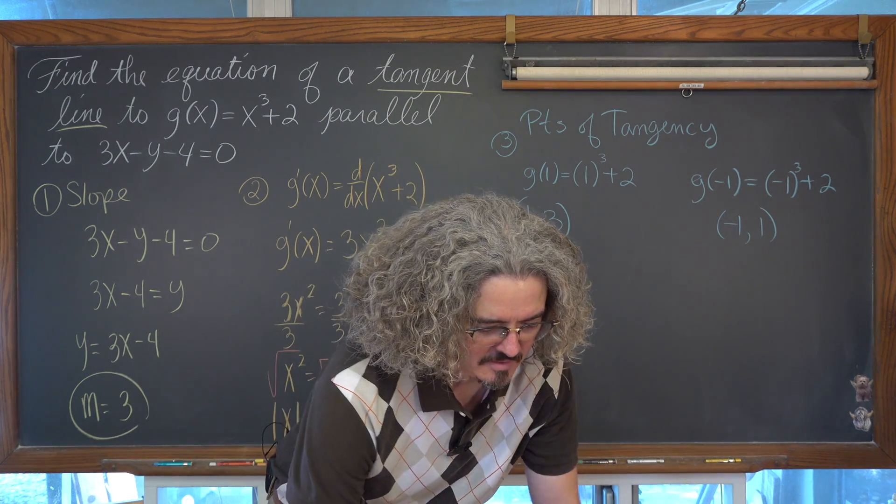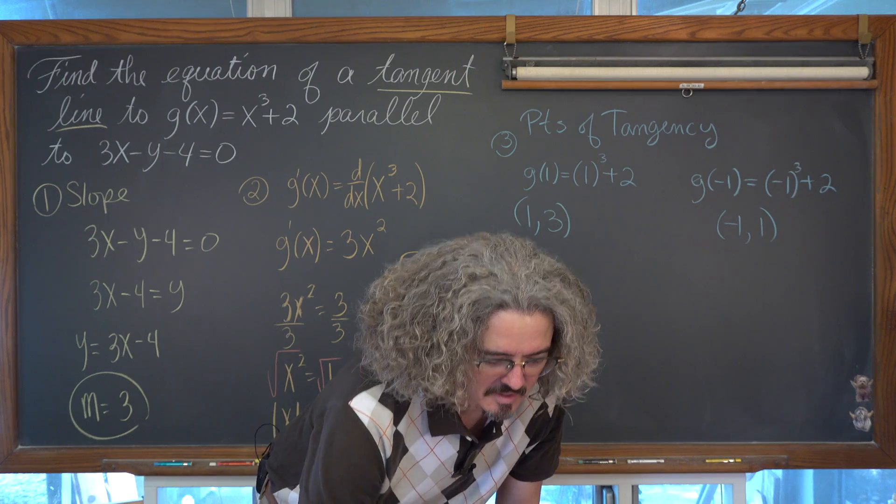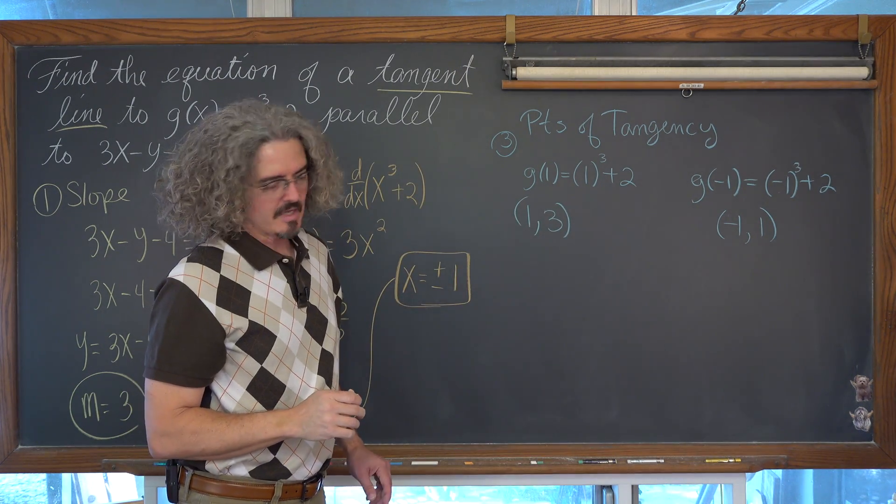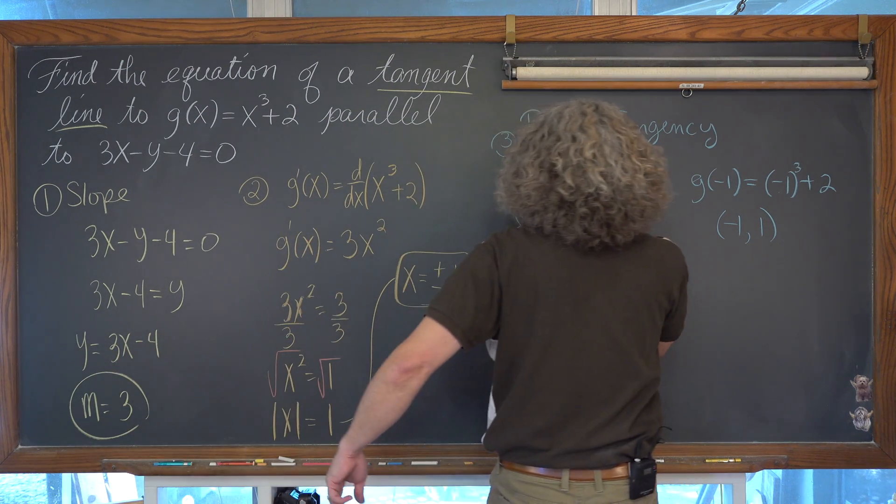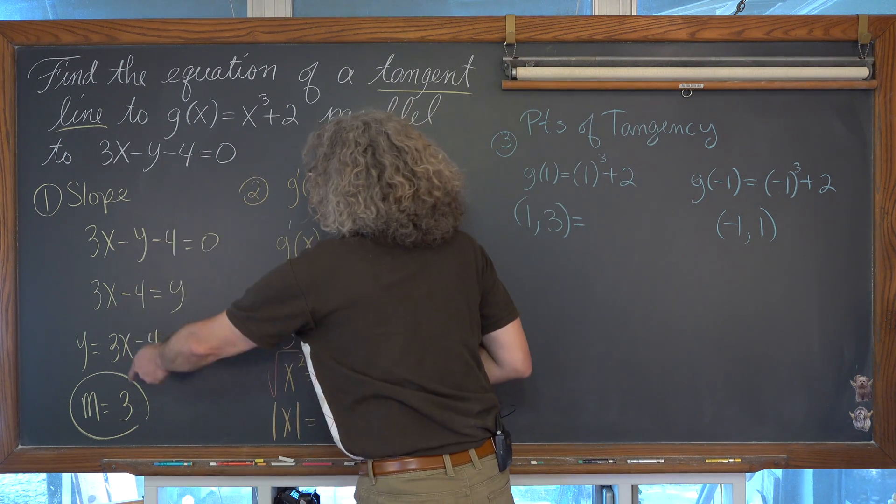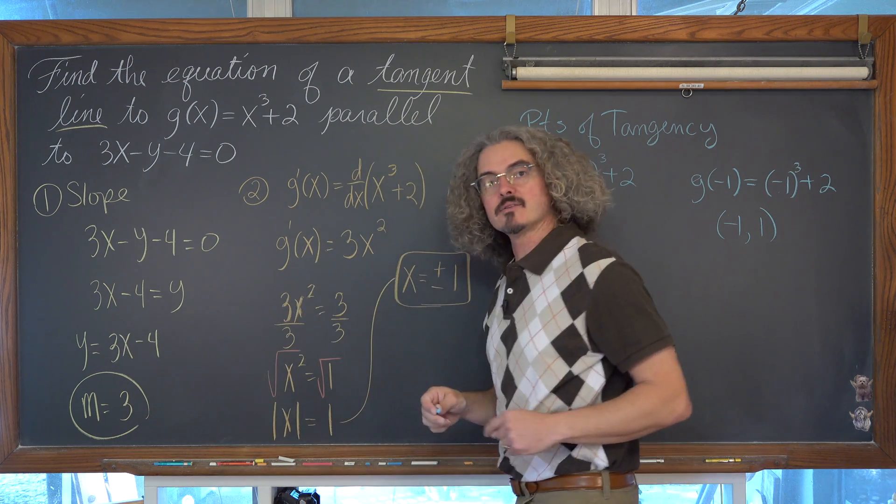Just to double check that I'm not doing some kind of silly mistake. Now we're going to use each of those points of tangency along with that slope that we want to work with, that parallel slope from the line, that slope of 3.